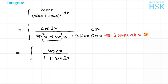Now if I take the denominator as equal to t, 1 plus sine 2x as equal to t, then on differentiating I'm going to get 2 cos 2x dx equals dt, so cos 2x dx equals 1/2 dt.